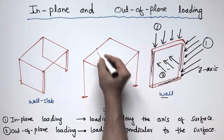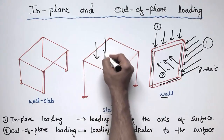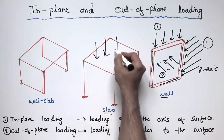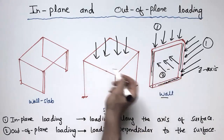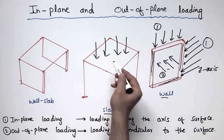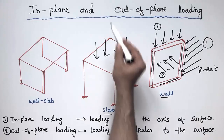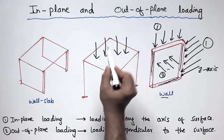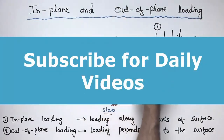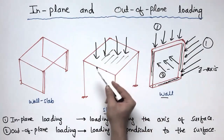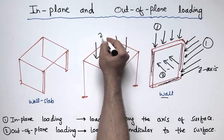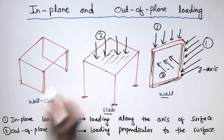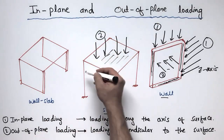Now let's consider the slab. The load acting on the slab from above — it may be the dead load or live load, such as the load from furniture or people moving on the slab — this is the vertical load coming on the slab. This load is perpendicular to the slab surface, so it is called out-of-plane loading.